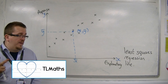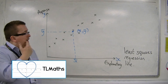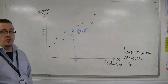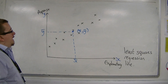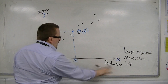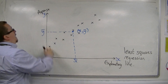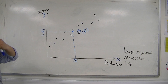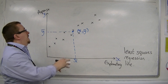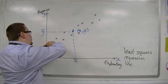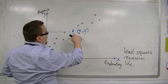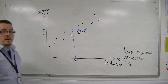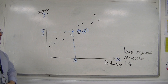In the previous video, I was introducing the least squares regression line. We had the explanatory variable and the response variable, we got our points plotted, and it makes sense that the least squares regression line would go through the coordinates of x-bar, y-bar. That just makes sense.